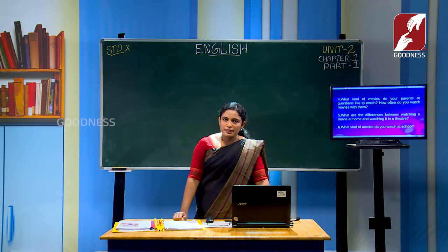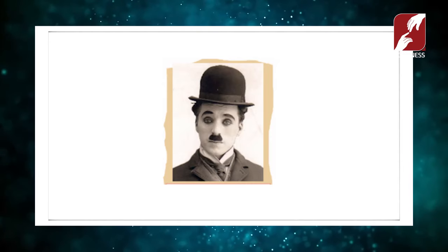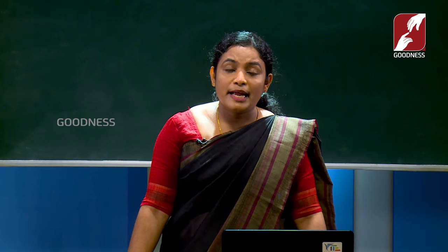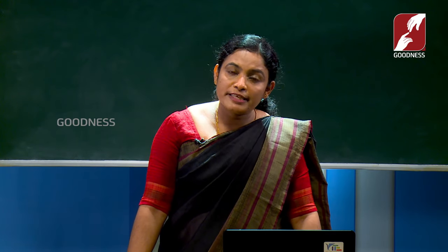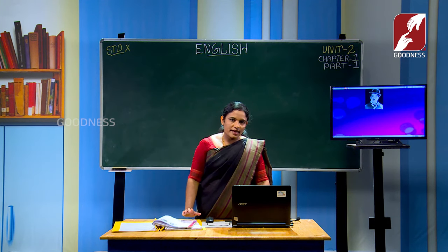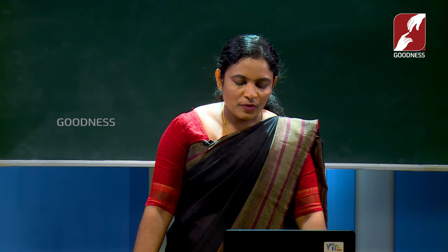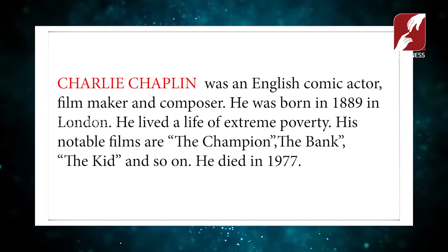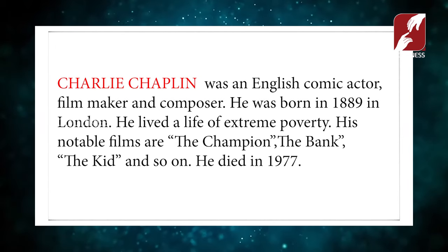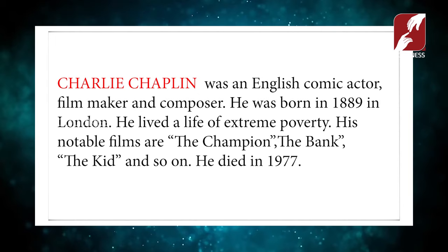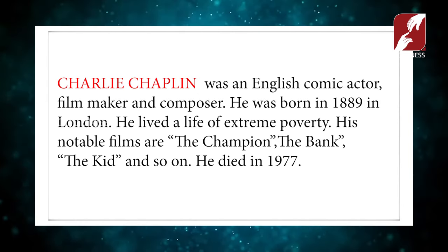Now I will show you some pictures of famous filmmakers — you can guess who they are. The first person is the famous Charlie Chaplin. In page number 42, three columns are given along with pictures of these famous personalities. You have to collect information about them from the internet and write down all their profiles in those columns. Charlie Chaplin was an English comic actor, filmmaker, and composer. He was born in 1889 in London. He lived a life of extreme poverty. His notable films are The Champion, The Bank, The Kid, and others. He died in 1977.